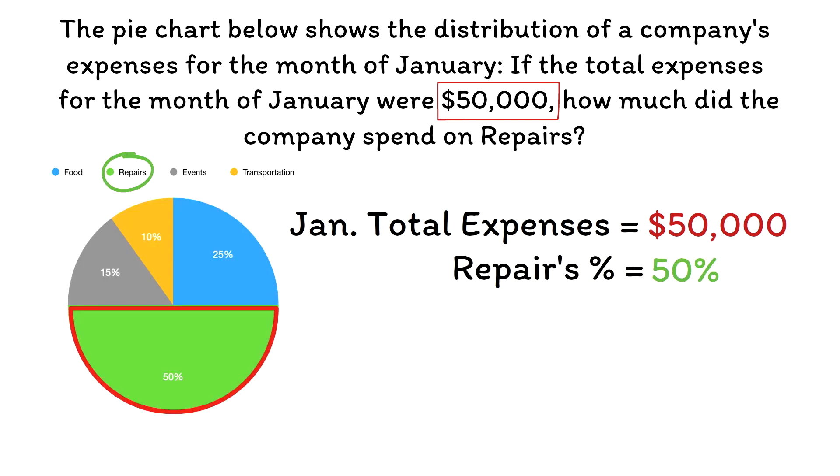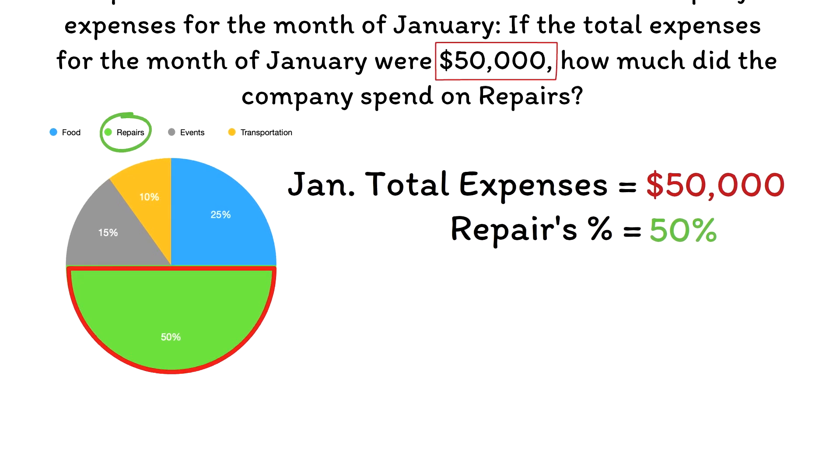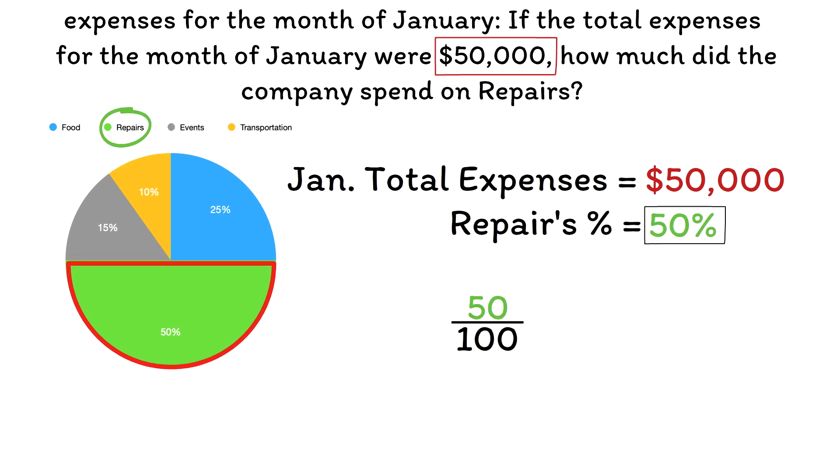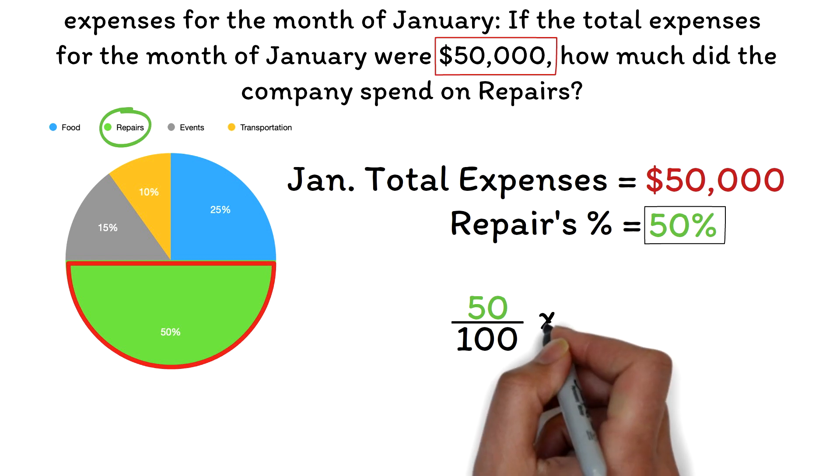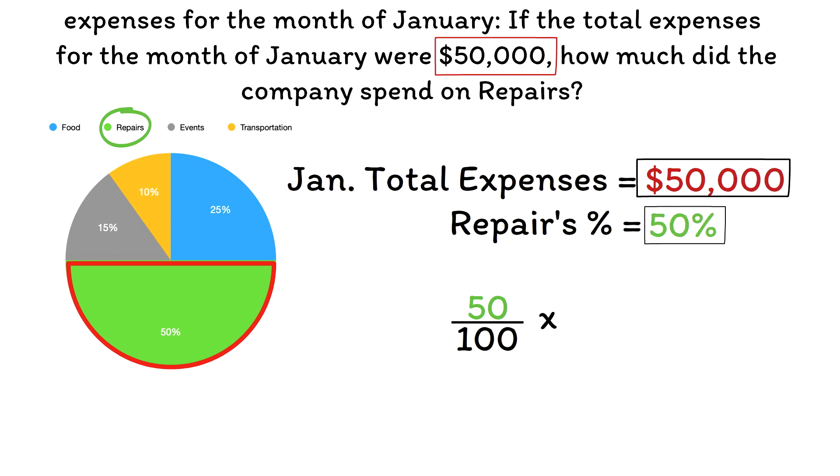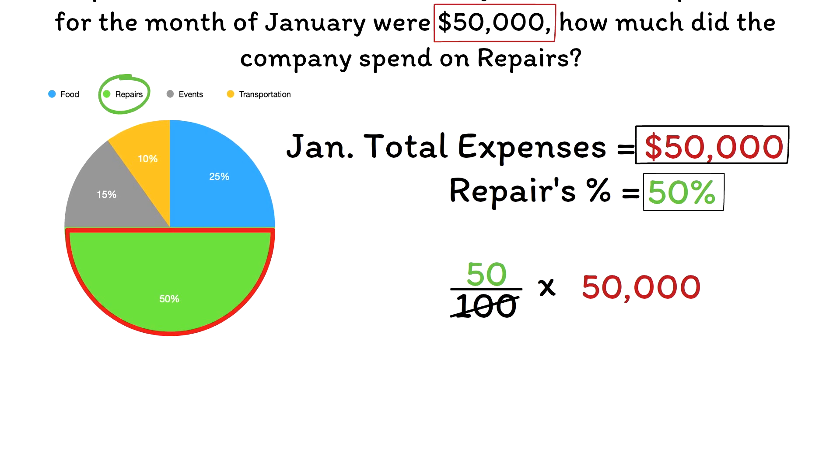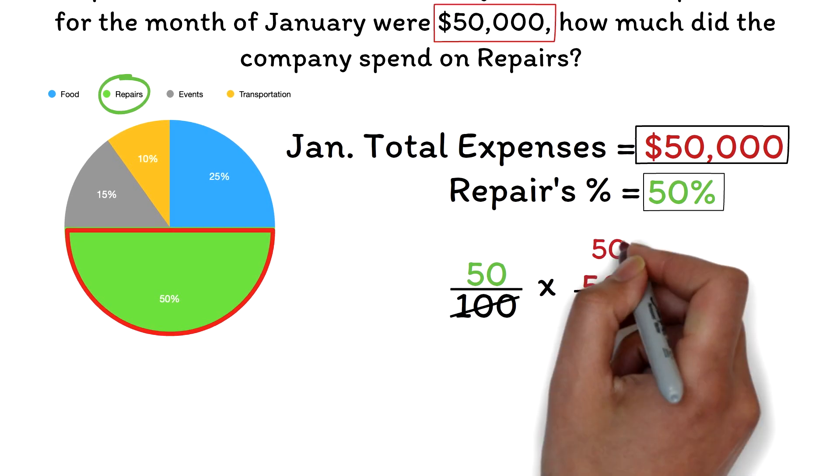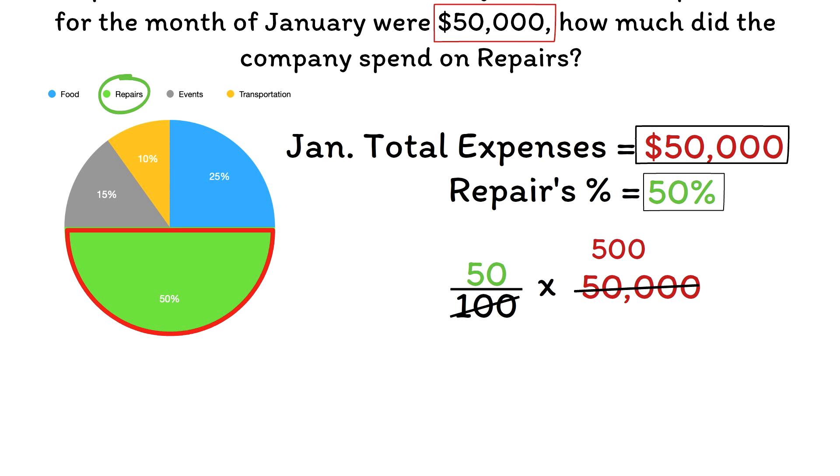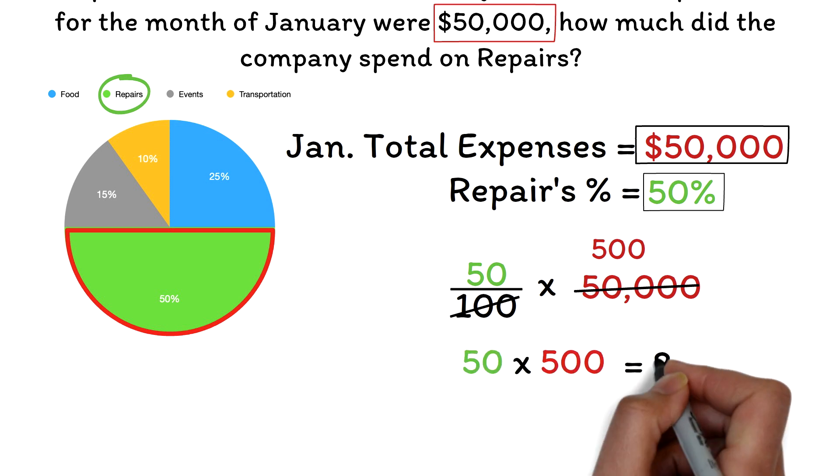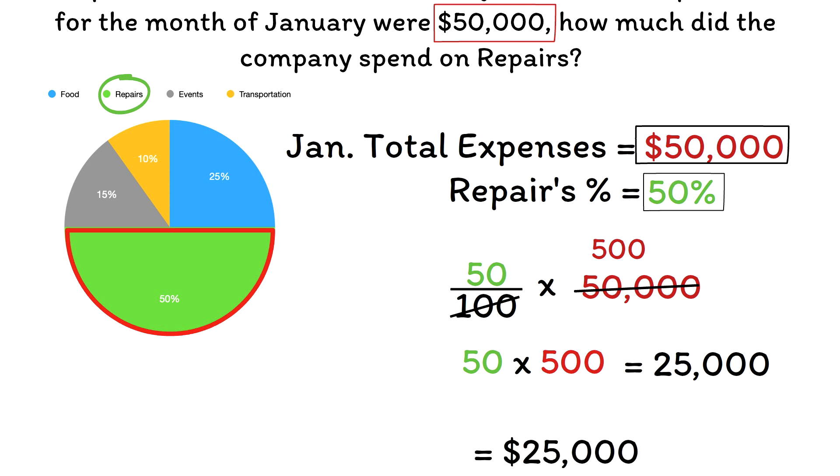To find the amount spent on repairs, we multiply the percentage of repairs with the total expenses. Hence, 50%, which is the same as 50 divided by 100, multiplied by the total expenditure, which is $50,000. To simplify this, 100 goes into itself once, but into 50, 500 times. This leaves us with 50 times 500, which is 25,000. This implies that the company spent $25,000 on repairs out of the total expenditure of $50,000.